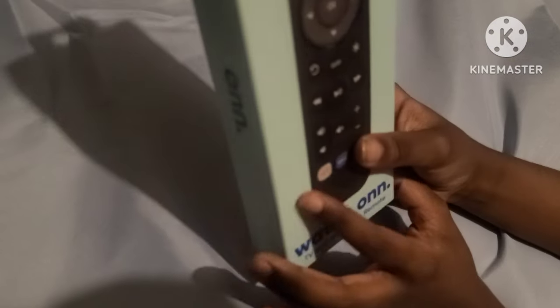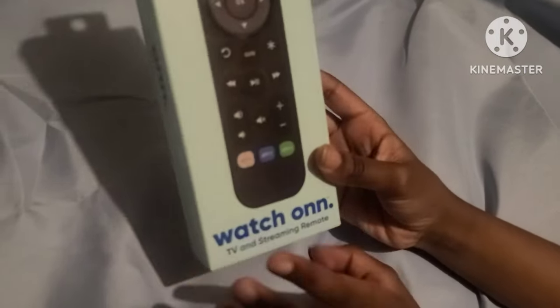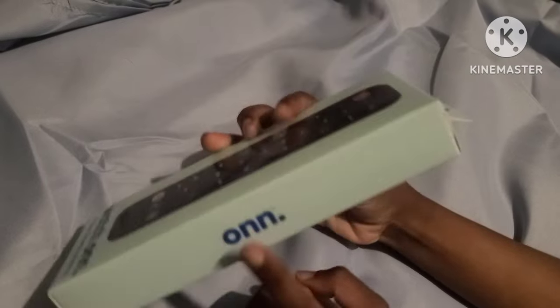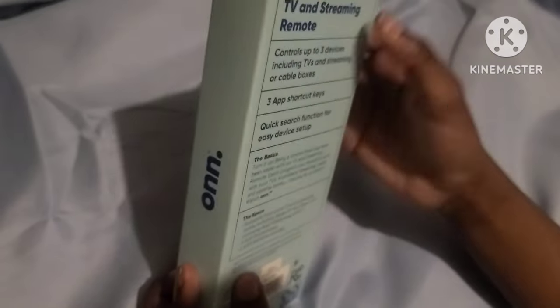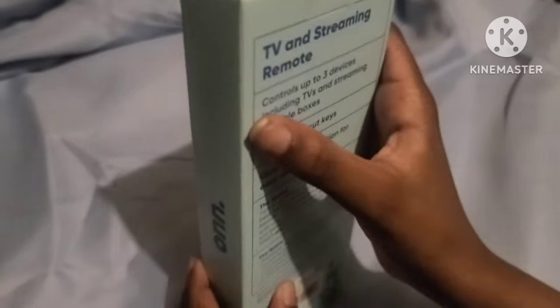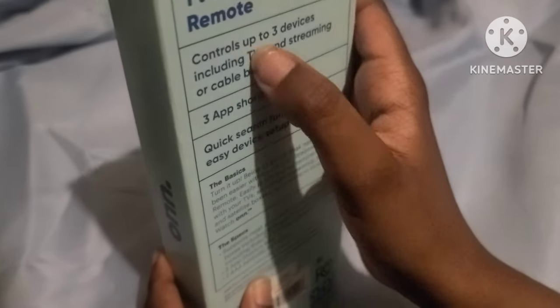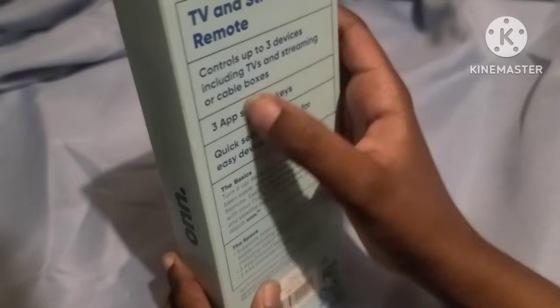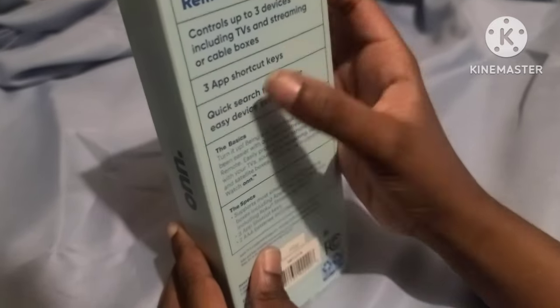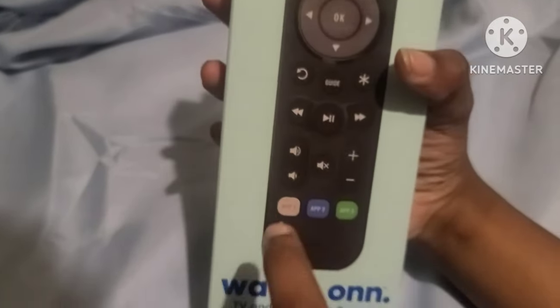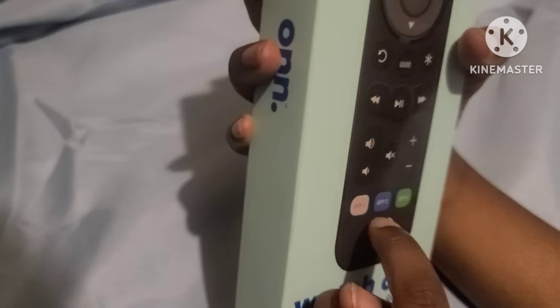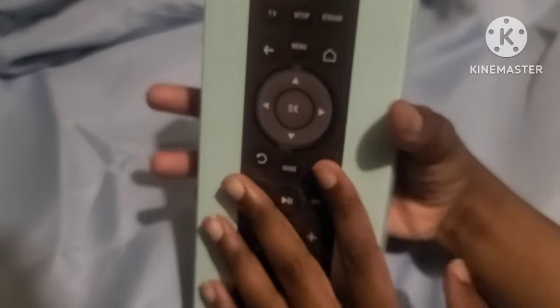Okay guys, welcome back to my dad's video. This is the Watch On Mode remote. It says on the back here, TV and streaming remote controls up to three devices including TVs, streamings, and cable boxes. Three app shortcut keys - this is Netflix, app one, app two, app three.